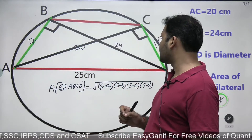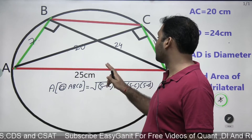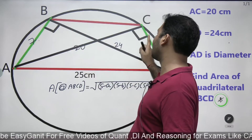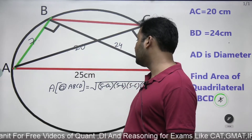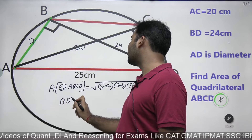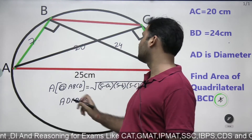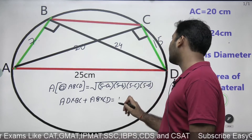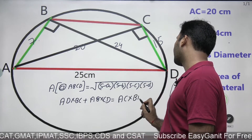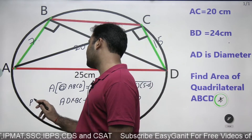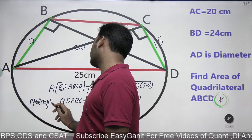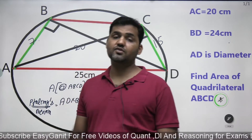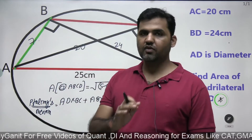This is where you will have to use Ptolemy's theorem. Ptolemy's theorem says that in a cyclic quadrilateral, the sum of the products of the two pairs of opposite sides equals the product of the diagonals. That is: AD × BC + AB × CD = AC × BD. So in this particular equation, using the known values — 25, 24, 20, and 7 — if BC = X, then: 25X + 15 × 7 = 24 × 20, giving 25X + 105 = 480. Therefore X = (480 − 105) / 25 = 375 / 25 = 15. So BC = 15 centimeters.